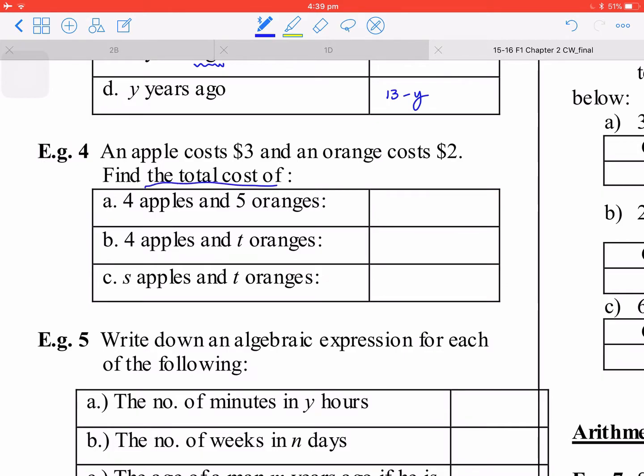For this one, you are going to find out the total cost of 4 apples and 5 oranges. You know that is 4 times 3, and then add, that is and, 5 times 2. So that is $22.